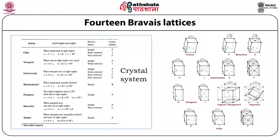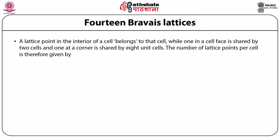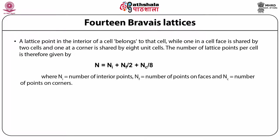For a face-centered cell, each face point is shared by two unit cells, contributing one-half per cell. With 6 faces: 1 + (1/2 × 6) = 4 lattice points. For base-centered: 1 + (1/2 × 2) = 2 lattice points. The formula is: N = Ni + (1/2)Nf + (1/8)Nc, where Ni is interior points, Nf is face points, and Nc is corner points. A cell with lattice points only at corners is primitive; additional interior or face points make it non-primitive.